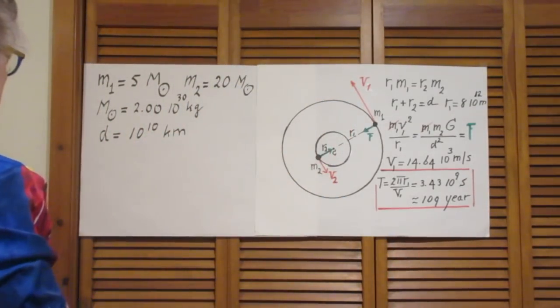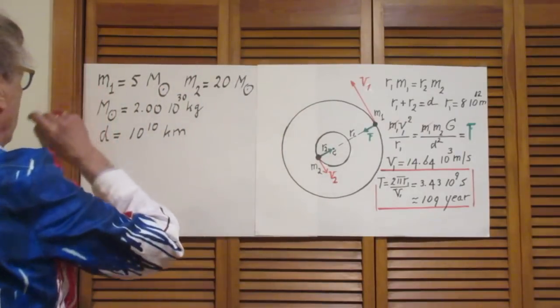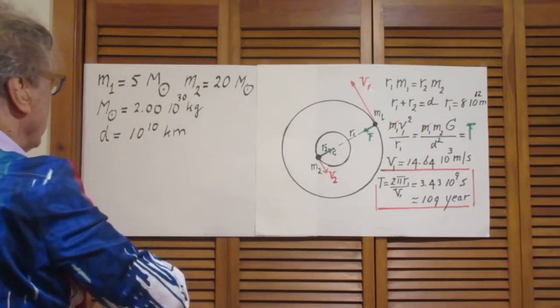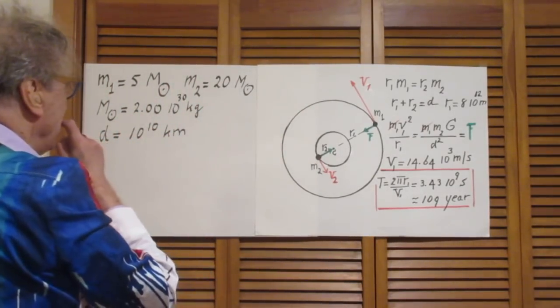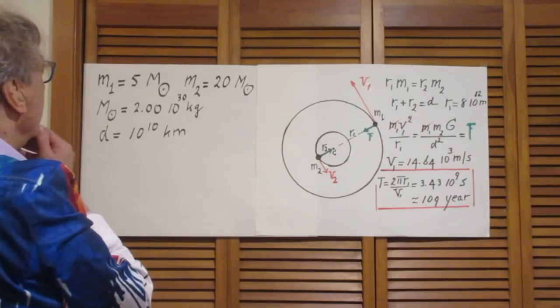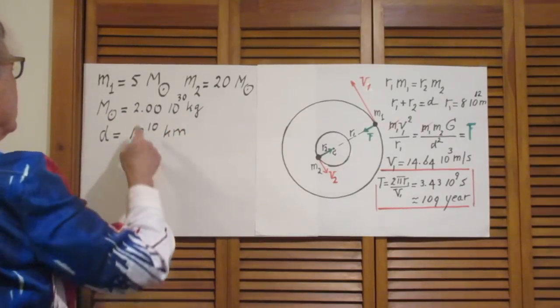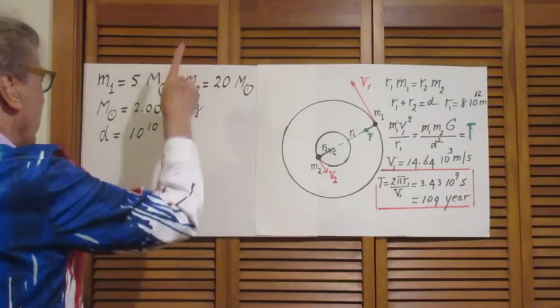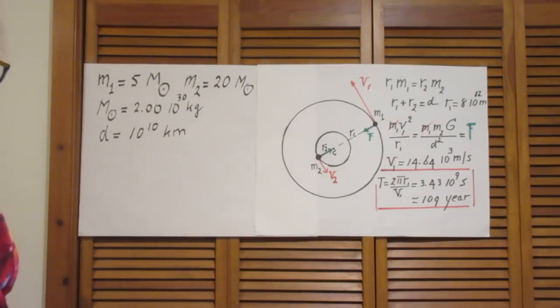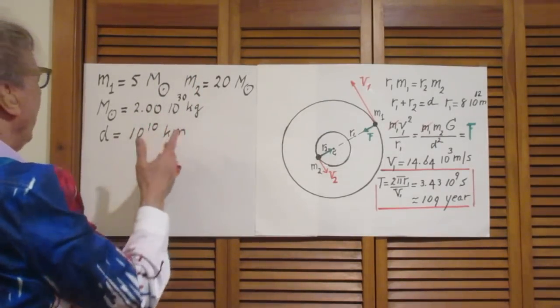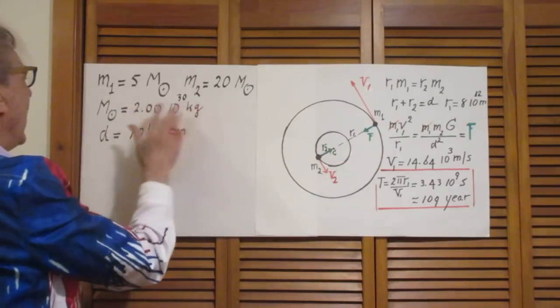Here is our system. One of the stars has a mass 5 times that of the sun, the other one 20 times that of the sun. We will think that the mass of the sun is 2.00 times 10 to the 30 kilograms, which the actual value is closer to 1.99, but this is fine.